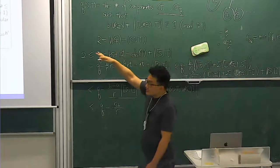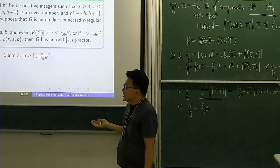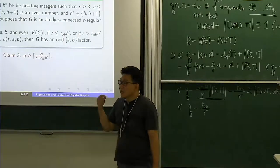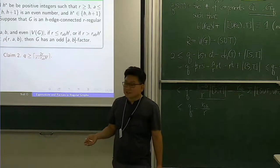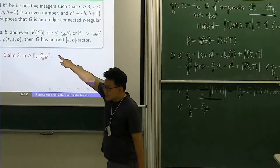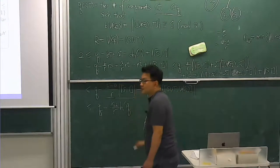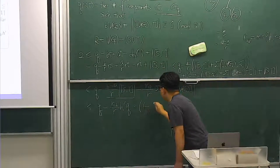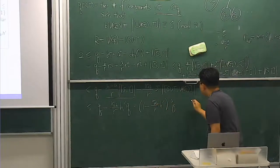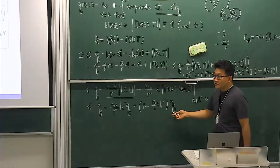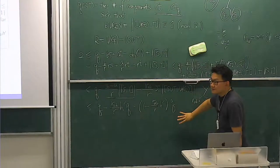We may have many components, but because the graph is H edge-connected, the number of edges coming out from each component must be greater than or equal to H. However, since we need the number of cut edges to be even by the degree-sum formula, we actually need H prime rather than just H. So Q satisfies a lower bound involving H prime. Now if φ(R,A,B,H prime) is greater than or equal to some threshold, then we have a contradiction, so this situation cannot happen — the quantity cannot be negative.